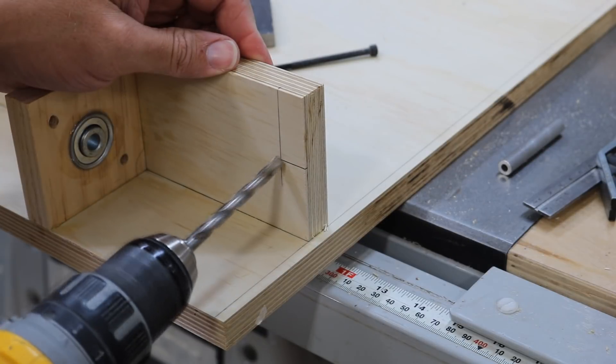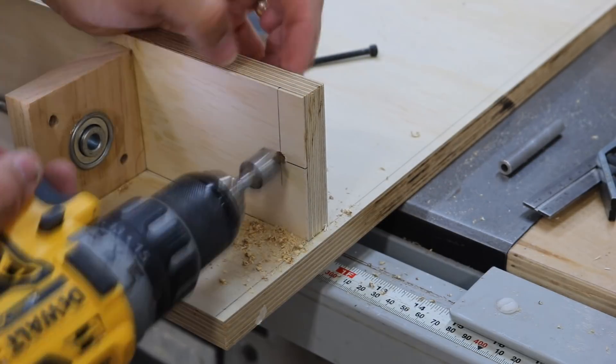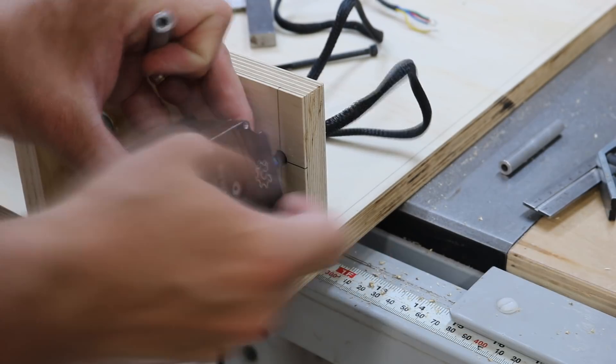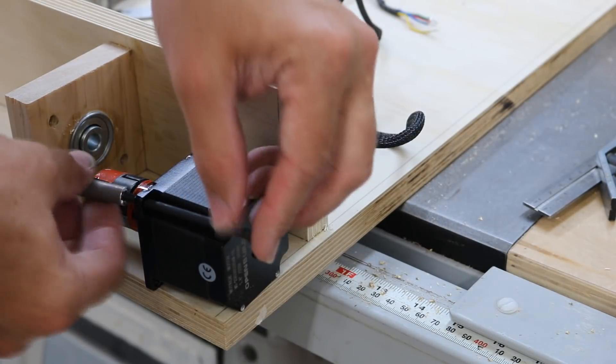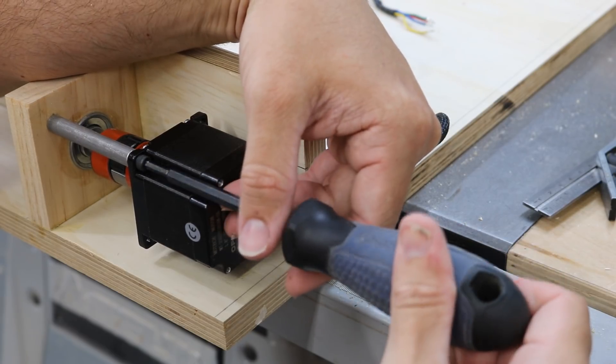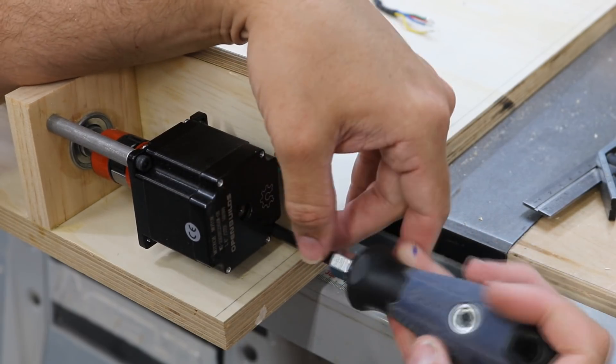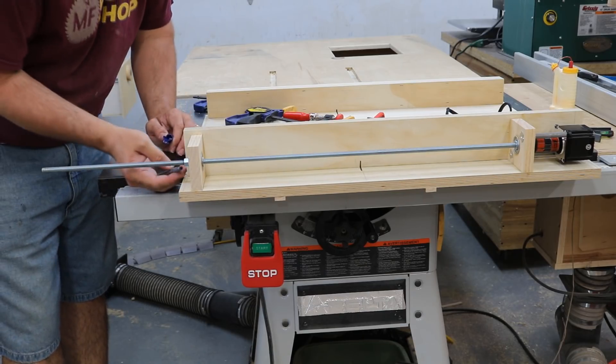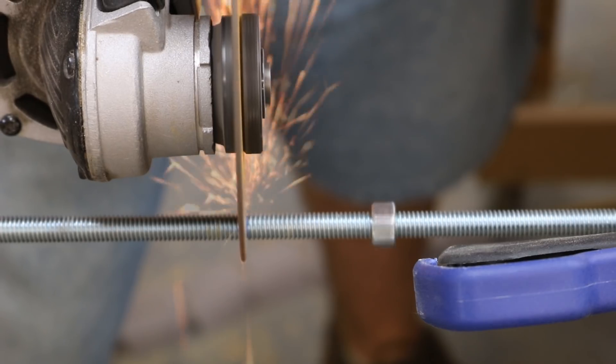So now I'm mounting the motor. I'm just drilling a hole to fish some wires through. And then I'm mounting the motor into that right side end block. Now I just need to measure and cut the all-thread to size.